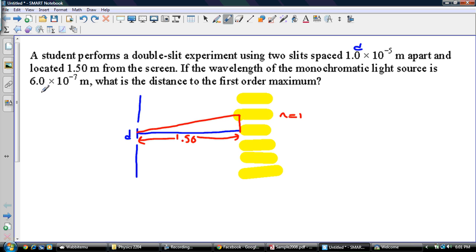We got lambda is 6.0 times 10 to the negative 7 meters. So if you remember our formula, it's n lambda is equal to d sine theta.